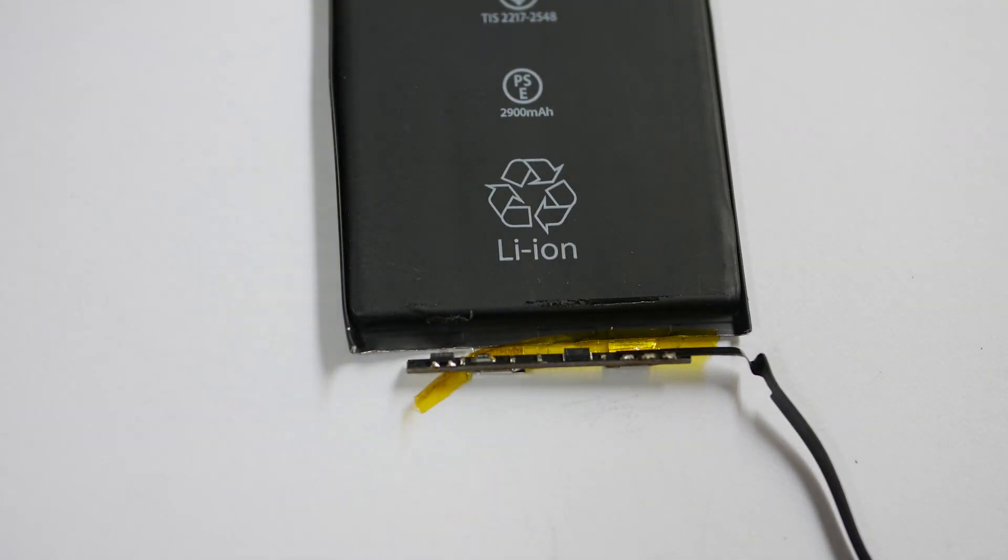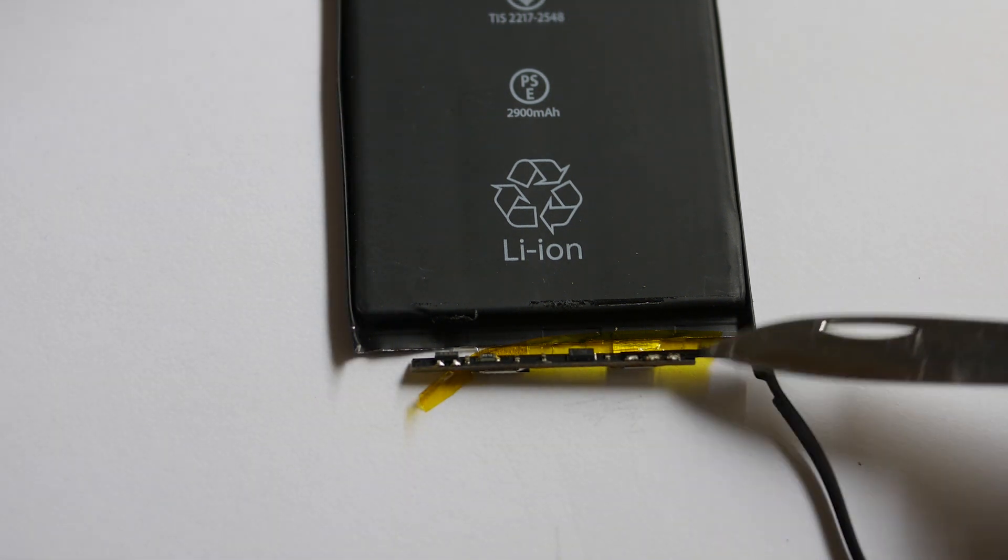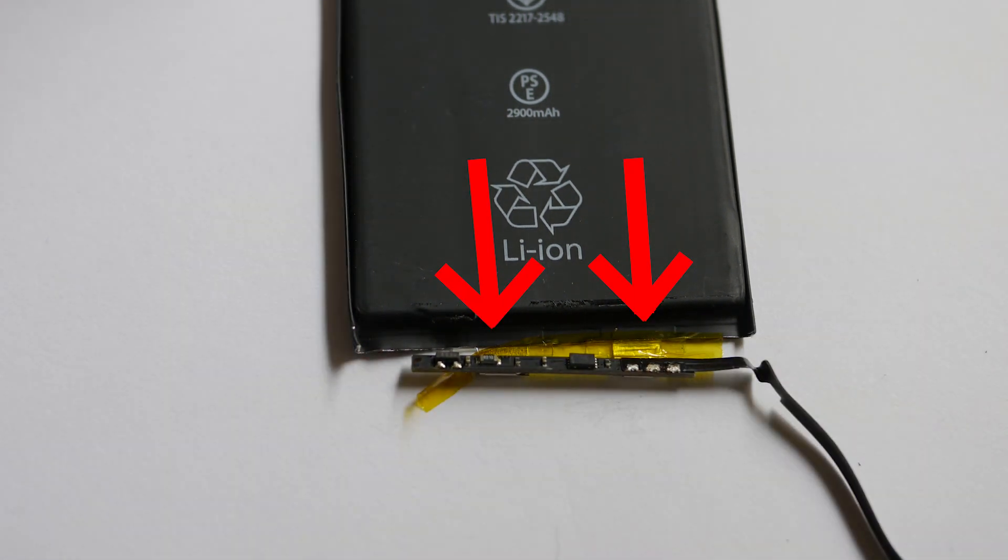Now this is where the battery balancer is, which helps limit the amp draw so the battery doesn't overcharge, and here we can see both the positive and negative terminals.